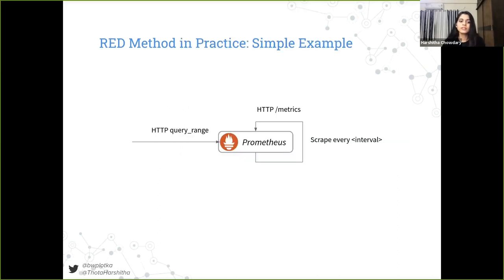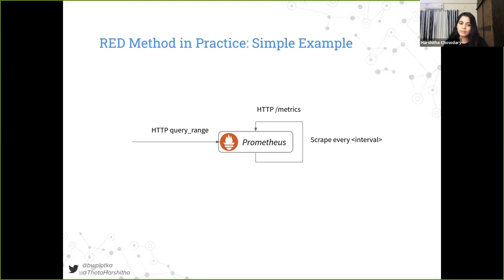But how can we instrument an application in order to satisfy the RED method? Let's take the simplest example ever. We have a Prometheus server — it is a web server that serves some HTTP requests. For example, it responds to PromQL queries, but it also collects metrics and allows monitoring. So let's use Prometheus to collect metrics about itself to show how we can monitor Prometheus in RED method fashion.